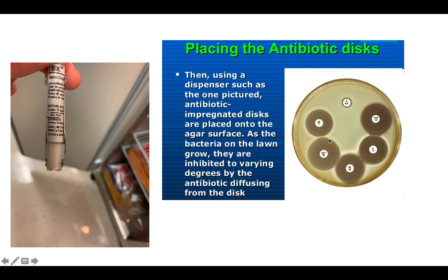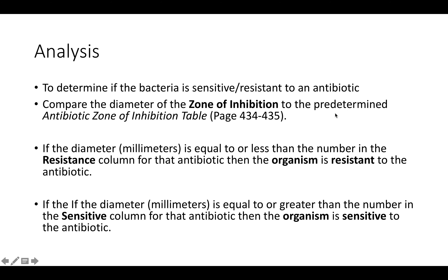You might assume that all of these antibiotics work except P, but in order to actually determine that, you have to use the zone of inhibition table on pages 434–435 in the textbook. If the diameter in millimeters is equal to or less than the number in the resistance column for that antibiotic, then the organism is resistant. If the diameter is equal to or greater than the number in the sensitive column, then the organism is sensitive to the antibiotic.